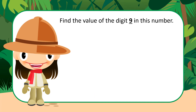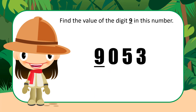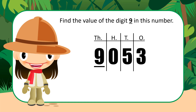Find the value of the digit 9 in this number: 9053. First, let's get the column names up. As we can see, the digit 9 is in the thousands column.